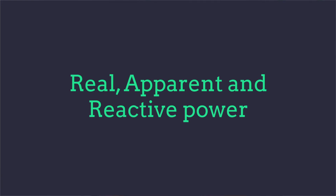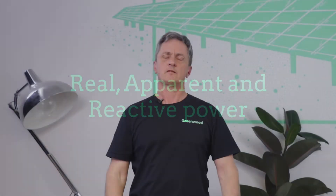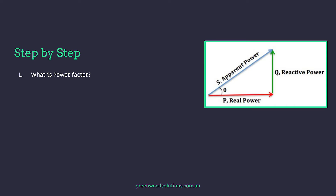Greenwood Training presents Power: Real, Apparent and Reactive. From a commercial solar perspective it's really important to ascertain quickly what is actually happening on that commercial site. We'll be talking today about what is power — what is power factor, what is real power, what is reactive power, and what is apparent power. All of these have a relationship, and it basically comes down to Pythagoras: apparent power equals real power plus reactive power.